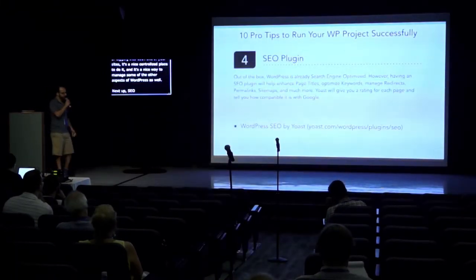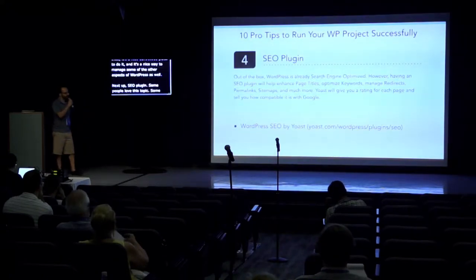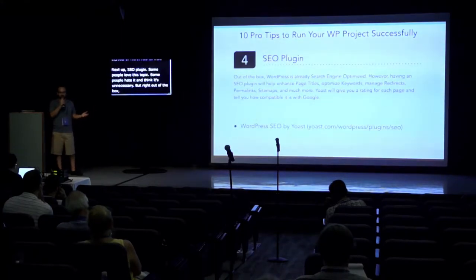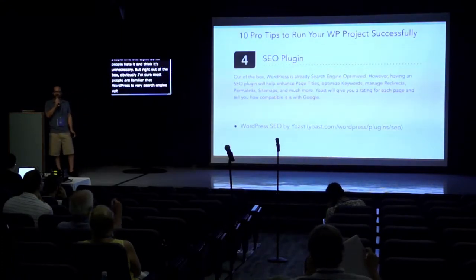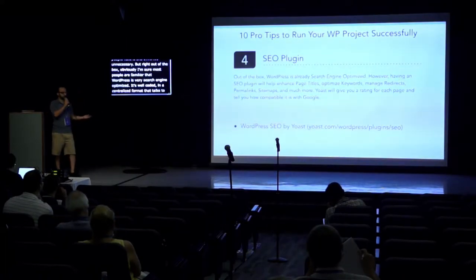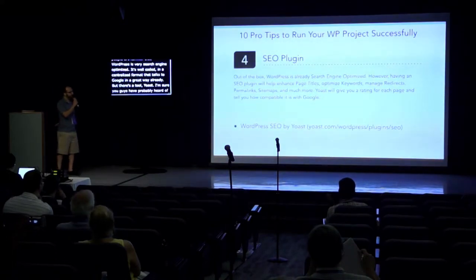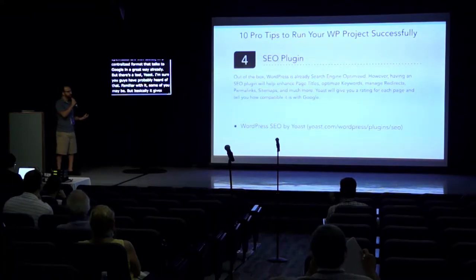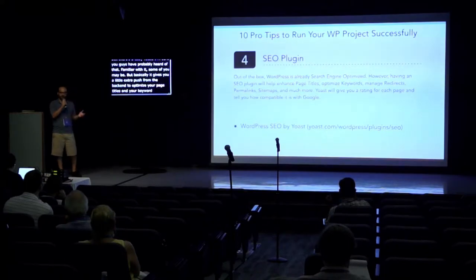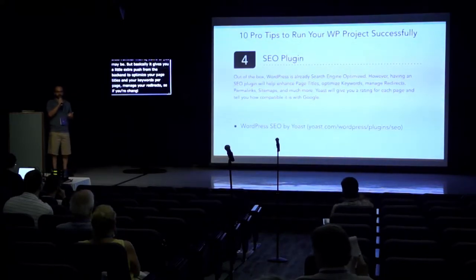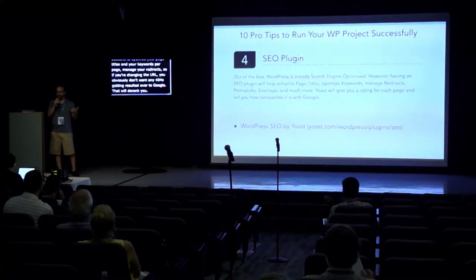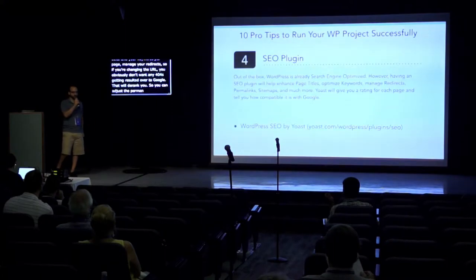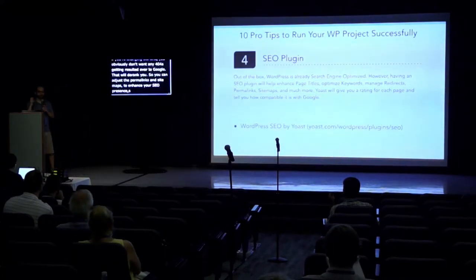Next up: an SEO plugin. Some people love this topic, some think it's unnecessary. WordPress is very search engine optimized right out of the box — it's well-developed and coded in a format that talks to Google already. But there's a tool called Yoast that gives you a little extra push from the backend to optimize your page titles and keywords per page, manage your redirects. If you're changing a URL, you don't want 404s resulting with Google — that will de-rank you. You can adjust permalinks and sitemaps to enhance your SEO presence beyond out-of-the-box WordPress.